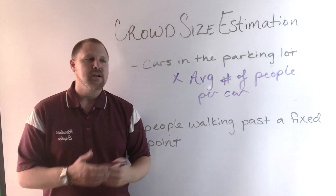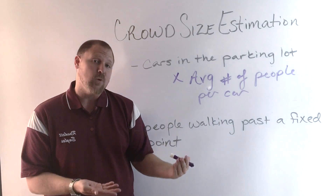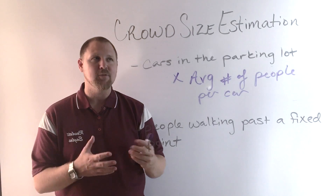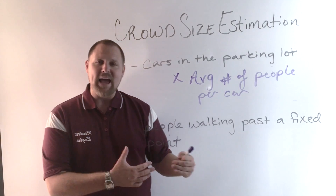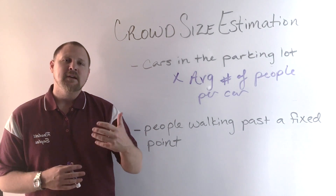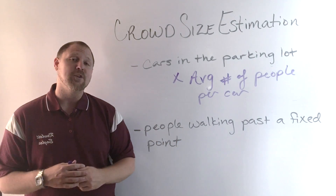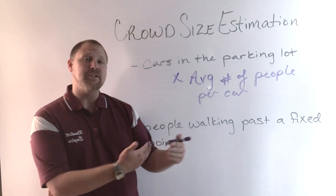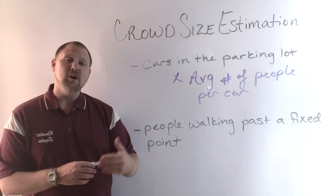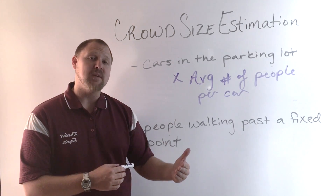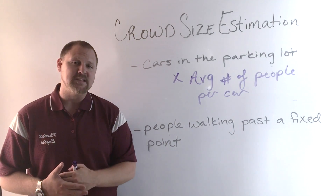That will give you an estimation based on the cars and the people who rode in those cars — a good crowd size estimation. Another method: people walking past a fixed point. You can time a fixed point and count how many people pass in one minute. You need something to pair that with to make it reasonable — specifically, the number of people passing per minute multiplied by the total number of minutes it takes for everybody to walk past that point.